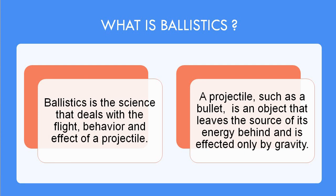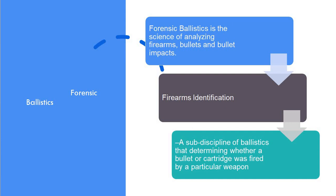So forensic ballistics can be defined as the science of analyzing firearms, bullets, and bullet impact. We basically study the firearms because in most cases where a person has been killed using a bullet, we want to identify which type of firearm was used and who was in possession of that particular firearm. All these things are studied in forensic ballistics, and the major part is firearms identification.